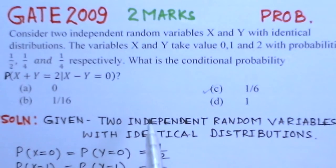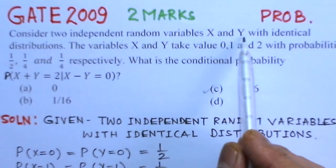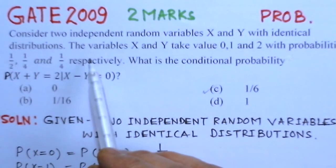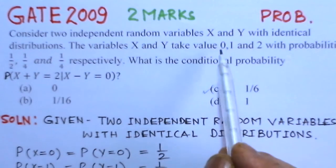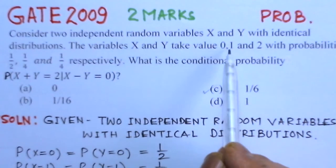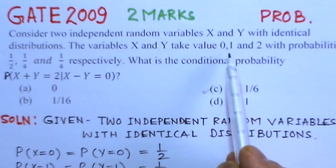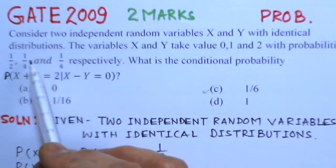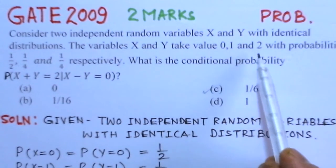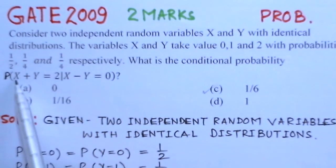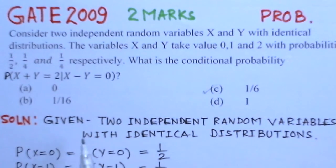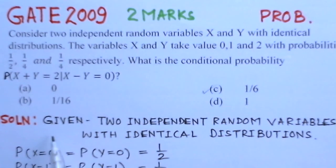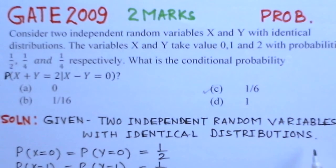There are two random variables X and Y with identical distributions. X and Y take values 0, 1, and 2. The probability for X=0 and Y=0 is 1/2, for X=1 and Y=1 the probability is 1/4, and for X=2 and Y=2 the probability is again 1/4. We have to find the conditional probability P(X+Y=2 | X-Y=0).